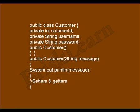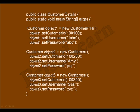Now let us see how to create an object for this customer class. Here we are creating another class called 'CustomerDetails' which has a main method to execute. As part of this class we have created three objects: object1, object2, and object3. We are trying to set messages using setter methods, and for the first object we are trying to pass a constructor with a parameter.